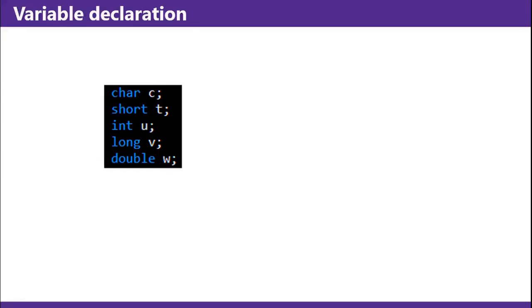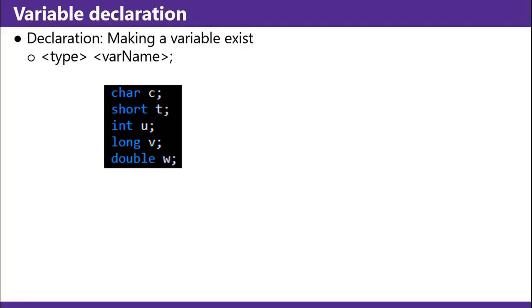Variable declaration. Declaration is making a variable exist. Its general format is: type, variable name, semicolon.